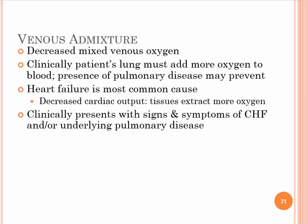Venous admixture involves decreased mixed venous oxygen. Basically, what's going on is you have a low cardiac output while metabolism stays the same, so you extract more oxygen out of the blood. By the time the blood gets back around to the lungs, there's less oxygen in it than normal. The lungs then have to work harder to replace the oxygen that was extracted. In decreased cardiac output, tissues extract more oxygen, and this clinically presents with signs and symptoms of CHF and/or underlying pulmonary disease.